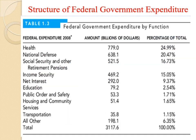We can also see the same federal government expenditures organized by function from a 2008 table. Social Security represents approximately 24.9%, or almost 25%, of total expenditures. National defense accounts for 20.4%.